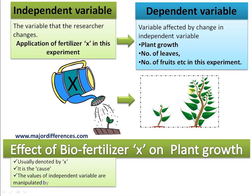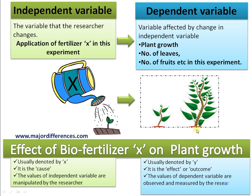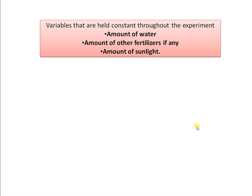Other differences: the independent variable is usually denoted by X — it is the cause that is causing the change, and its value is manipulated by the researcher. The dependent variable is denoted by Y — it is the effect, outcome, or result of the experiment, and its values are observed and measured by the researcher.